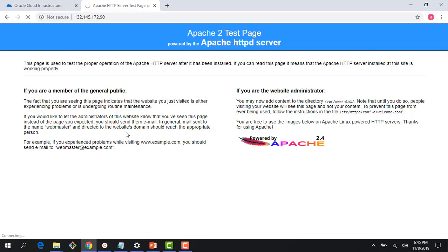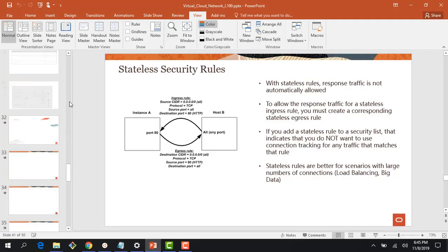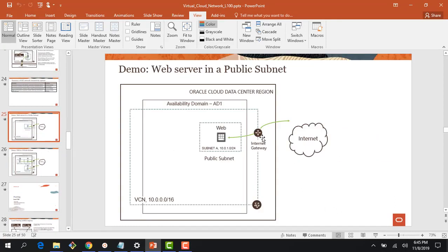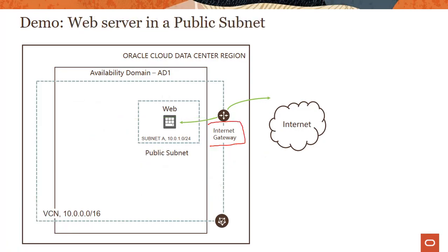The packets are black-holing even though the internet gateway is in place. You can see the site cannot be reached. So even with the internet gateway present and a public IP assigned, because port 80 is not open in the security list, traffic cannot get in.